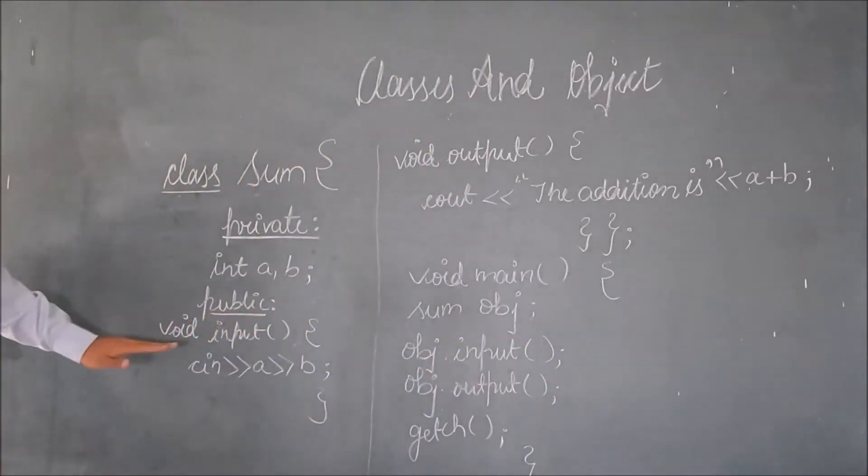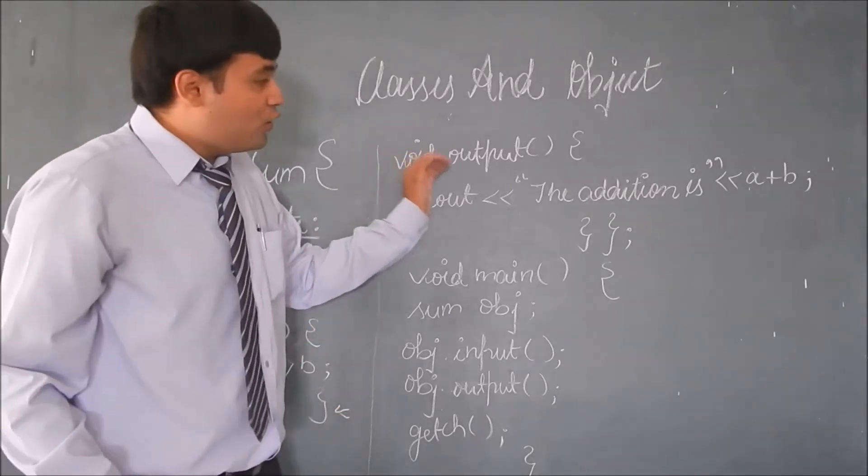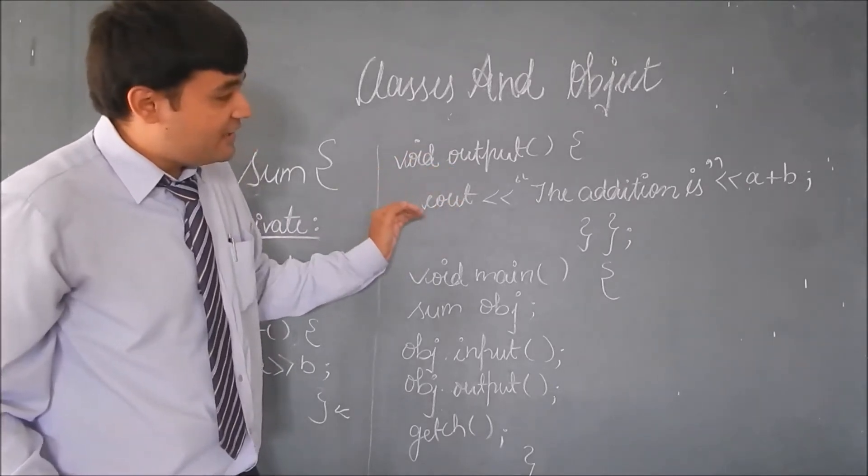We take an input function, we define two inputs A and B and this function is over here. In the output function we are just returning the addition.